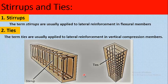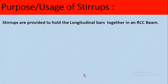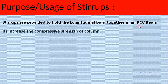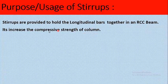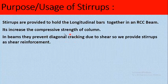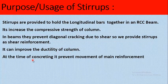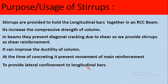The purpose and usage of stirrups: stirrups are provided to hold the longitudinal bars together in an RC section, so their main purpose is to hold the longitudinal bars in position. In case of columns, ties increase the compressive strength of the column. In beams, they prevent diagonal or inclined cracks due to shear, acting as shear reinforcement. Ties also improve the ductility of columns. At the time of concreting, stirrups prevent movement of main reinforcement and provide lateral confinement to the longitudinal bars.